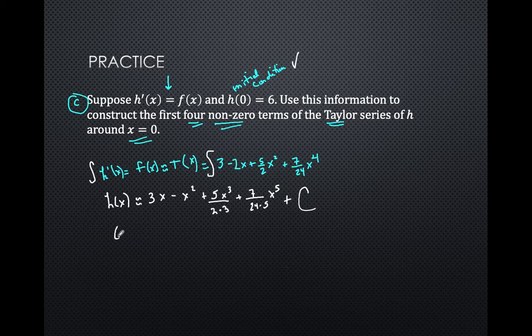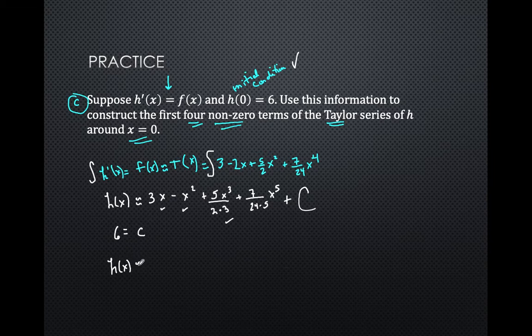So, if they're telling me 6 is equal to H of 0, so I'm going to put 0 in for all this, so what am I going to get? 0, 0, 0, and 0, so 6 is equal to C, therefore, H of x is approximately, now when you're doing a series, you should put the constant first, because this is really 6x to the 0.